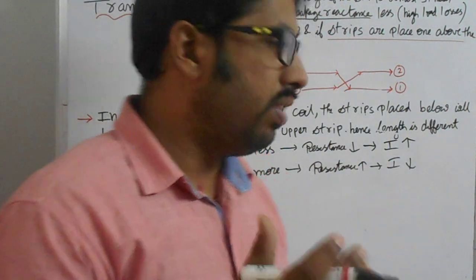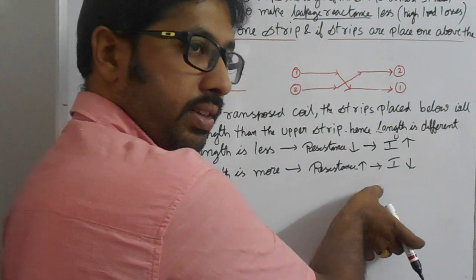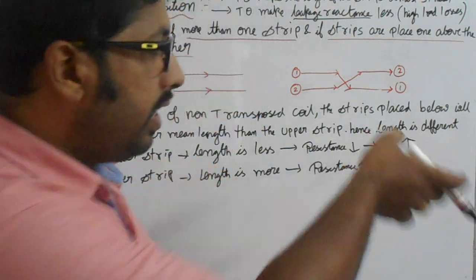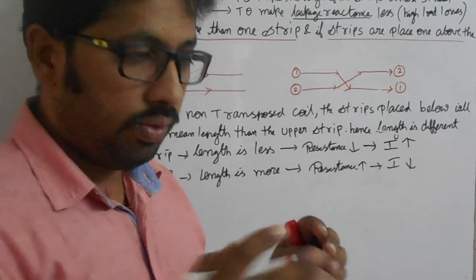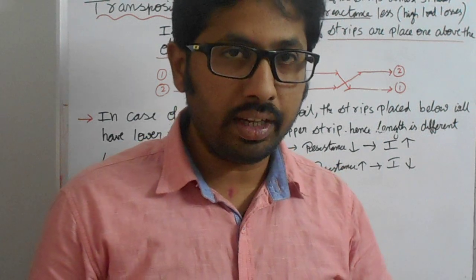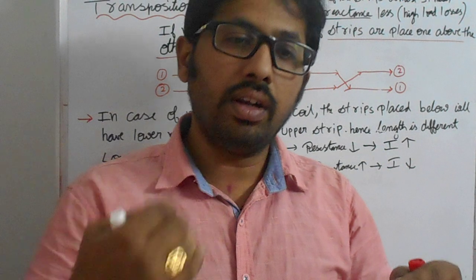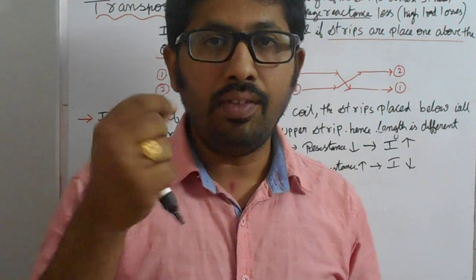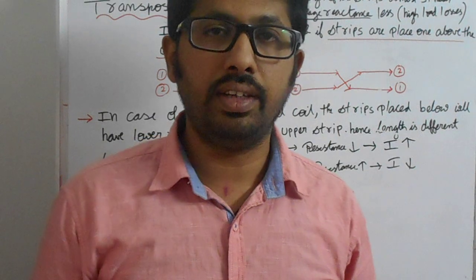In the next video, we will see how to get a window height. From window height only, we can design the conductor size, LV conductor size, everything. When we are doing the core assembling, core manufacturing, based on that window height, we will decide the LV size, width, depth, we will design. Thank you.